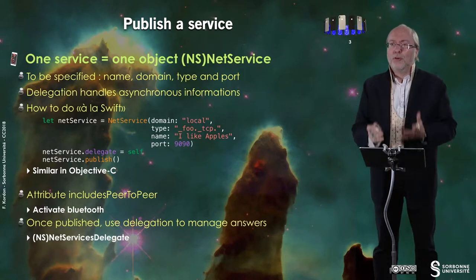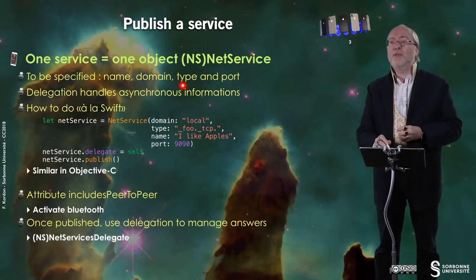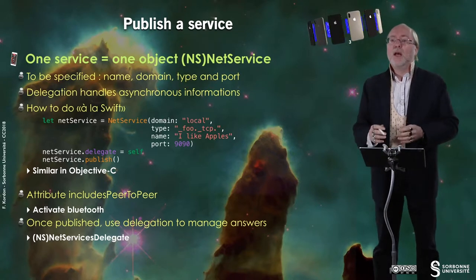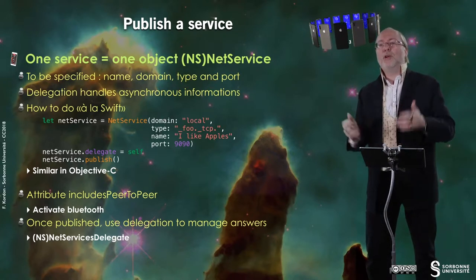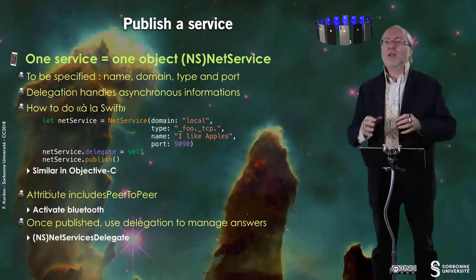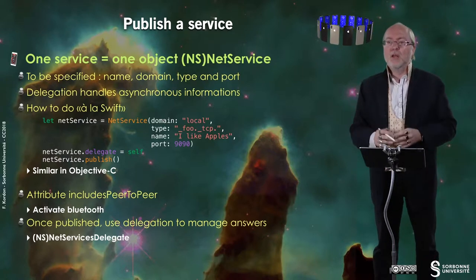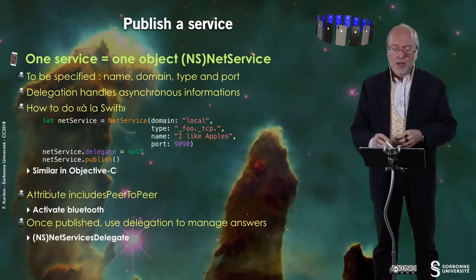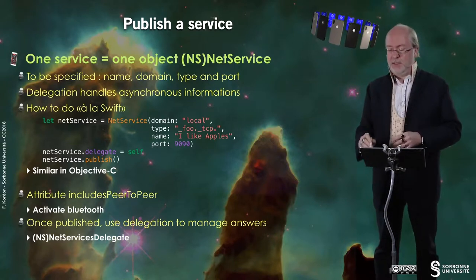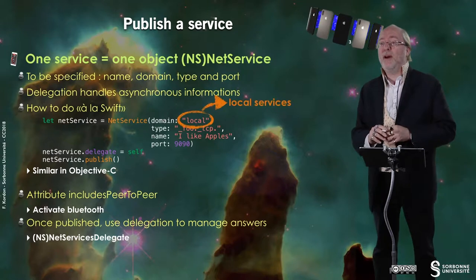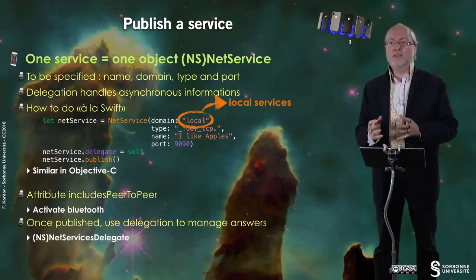In that object you must specify the name, the type, and the port. Then by delegation you will handle asynchronous information. Let's have a look at the way you do it in Swift. Here you have this NetService, and you first specify 'local' for local services.